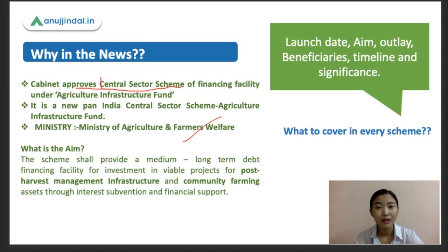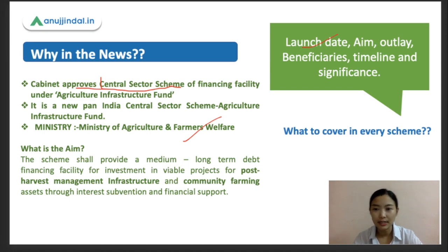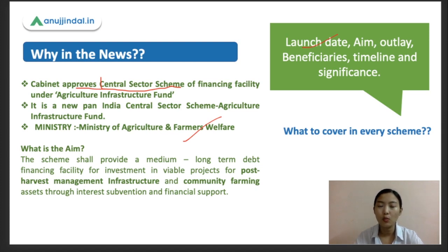Whenever you study any scheme, there are key things to keep in mind: first, the launch date; second, the main aims and objectives — what benefits people will get; third, the outlay — how much money the government has sanctioned; fourth, the beneficiaries; fifth, the timeline or duration of the scheme; and finally, the significance — what impact it has on people.